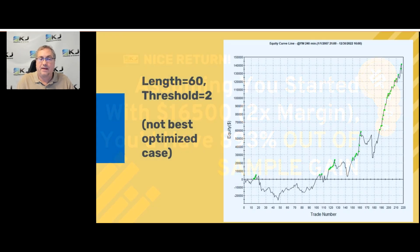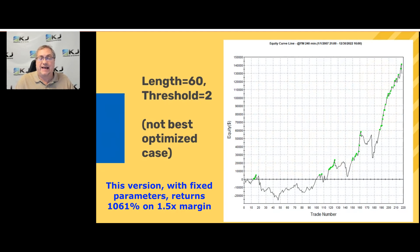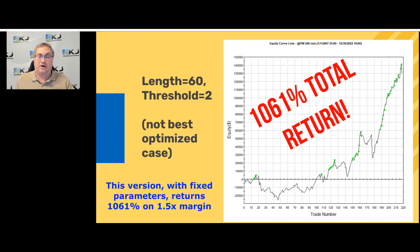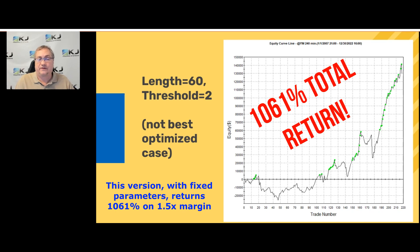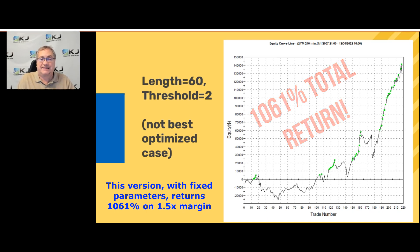For those who don't do walk-forward testing, here's a comparable version with static variables: a length of 60 and a threshold of 2, using the code I showed earlier. It's not the best-case result from optimization — it's further down the list — but it's still one of the better performers. Keep in mind you never want to pick the best optimized result when using static parameters. One reason I use walk-forward testing is to avoid that in-sample bias where you're testing and evaluating over the same period.